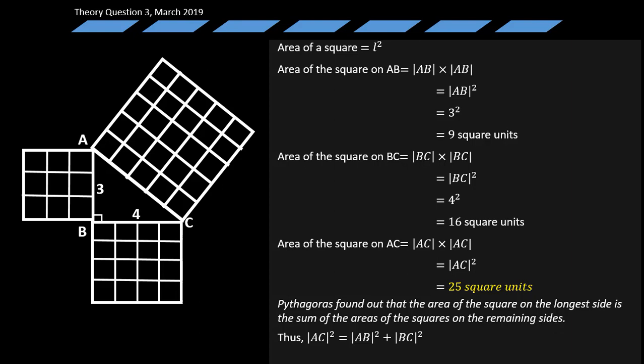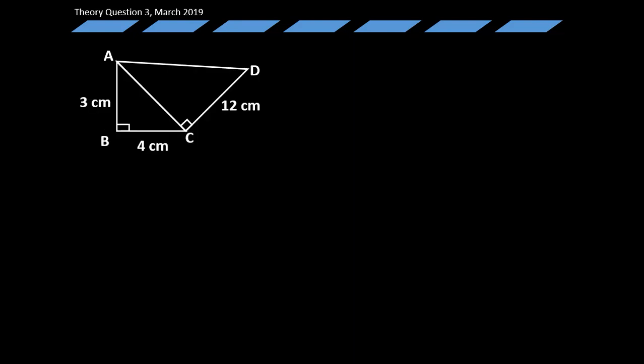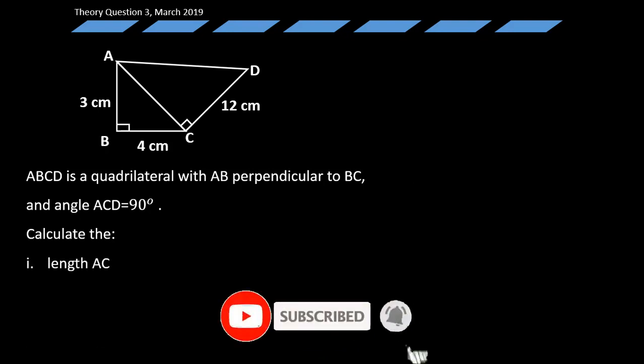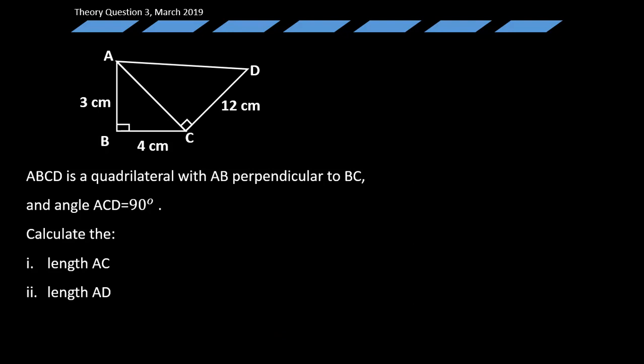Now let's proceed to the solution of the question. ABCD is a quadrilateral with AB perpendicular to BC and angle ACD equal to 90 degrees. Since the question involves right-angled triangles, we will be using the Pythagorean theorem.